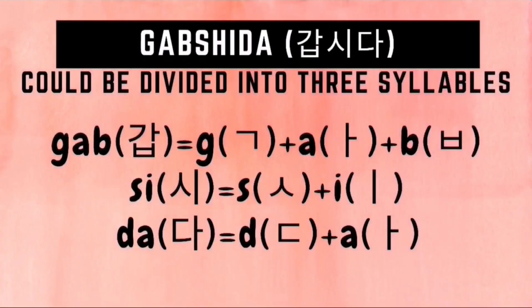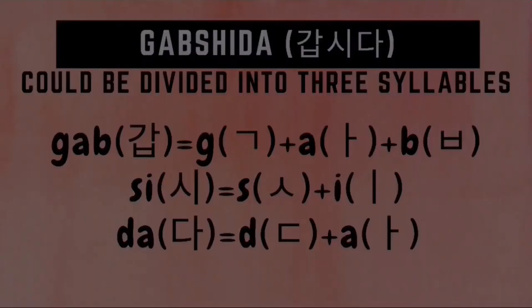How do we write this in Hangul? This is composed of three syllables. For the first syllable 'kap', we need to draw first a gi-yeok character followed by an a character, followed by a bieup character. For the second syllable 'si', we need to draw a siot character followed by an e character. And for the last syllable 'da', we need to draw a digeut character followed by an a character. Then we just combine these three syllables.